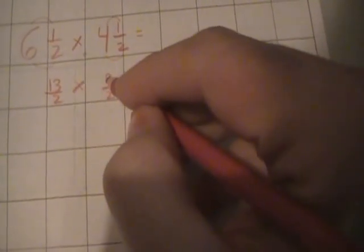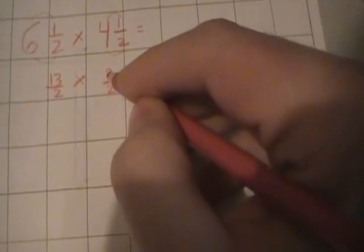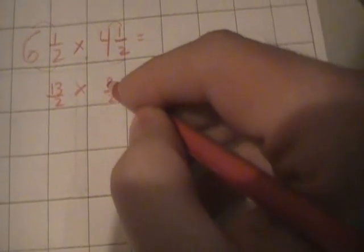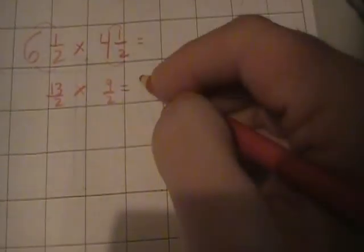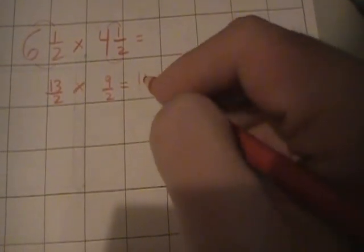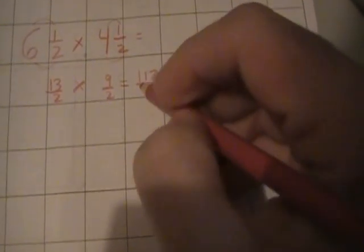So now all we have to do is apply the multiplication algorithm, which says multiply straight across. Thirteen times nine - so thirteen times ten is a hundred and thirty, so thirteen times nine would be thirteen less than a hundred and thirty, which is a hundred and seventeen. And two times two is four.